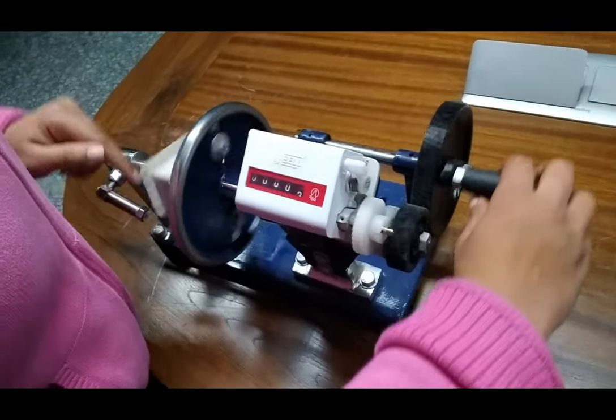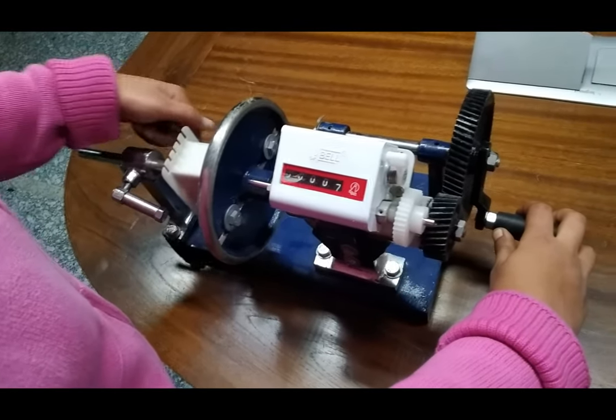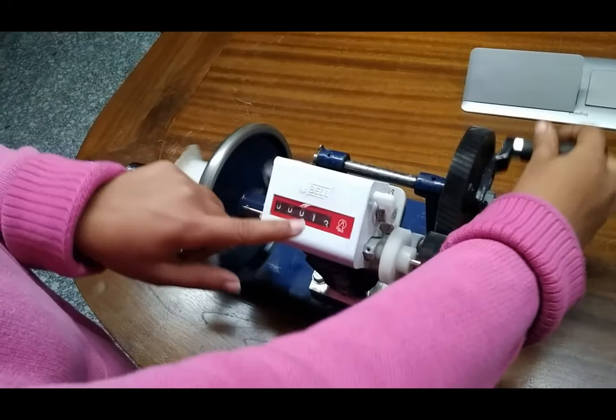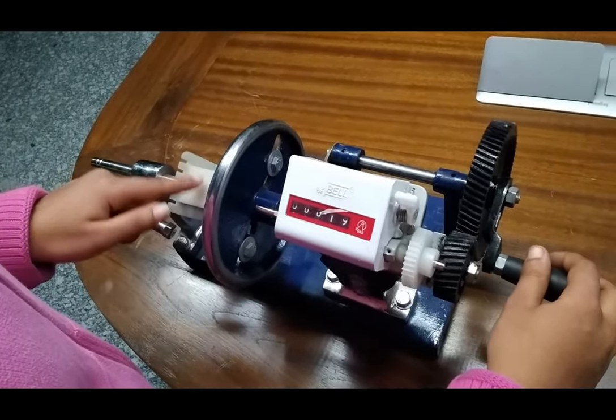Here the coil wire is being wound on this block like this. And this meter is showing the number of turns we have covered on this block.